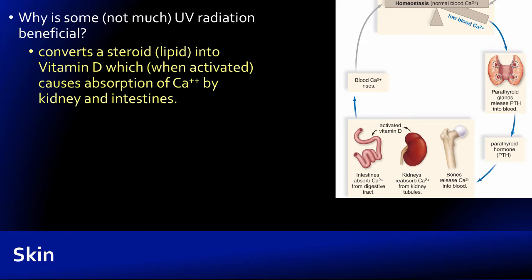If UV radiation is damaging, why can some UV radiation be beneficial? UV radiation helps convert a cholesterol-like steroid molecule in our skin into vitamin D. Vitamin D, when activated, causes the absorption of calcium by the kidney and intestines. The parathyroid glands, located on the back of the thyroid gland, produce a hormone whose job in part is to activate vitamin D, leading to reabsorption of calcium from kidney tubules — so we're not urinating out calcium we need — and to increase our ability to absorb calcium from our digestive tract.